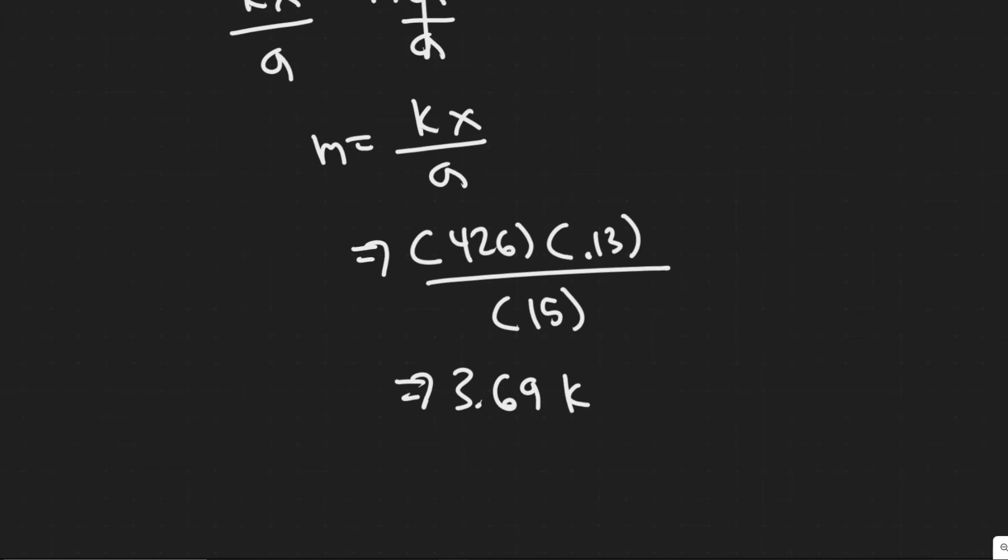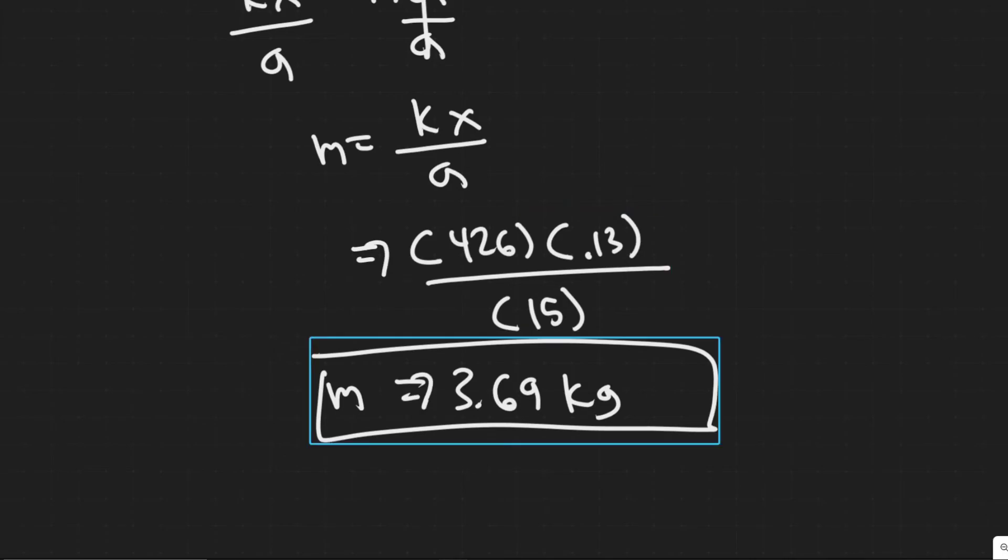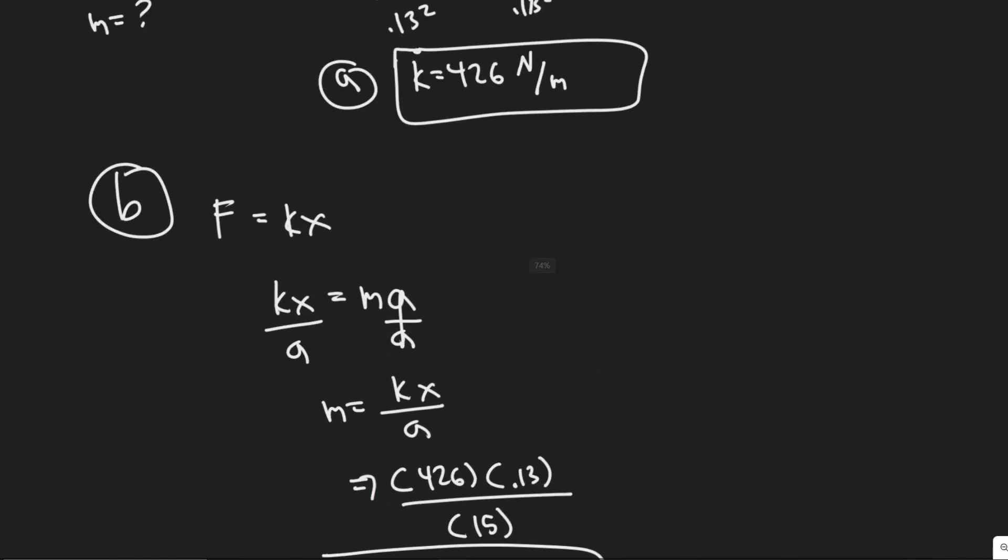So 3.69, we're dealing with mass here, so it's in kilograms. So 3.69 kilograms, that's going to be your answer for B, so your mass.